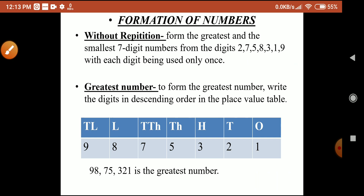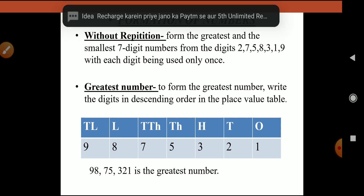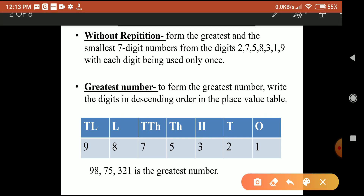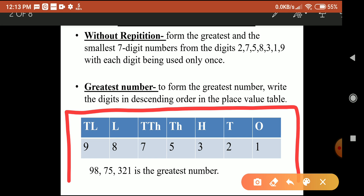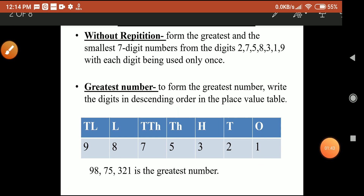To form the greatest number, write the digits in descending order in the place value table. The place value positions are: ones, hundreds, thousands, ten thousands, lakhs, and ten lakhs. In descending order, the highest digit is at the ten lakhs position. Each digit is smaller than the previous: 9, 8, 7, 5, 3, 2, 1. The final greatest number is 98,75,321 — ninety-eight lakh seventy-five thousand three hundred and twenty-one.